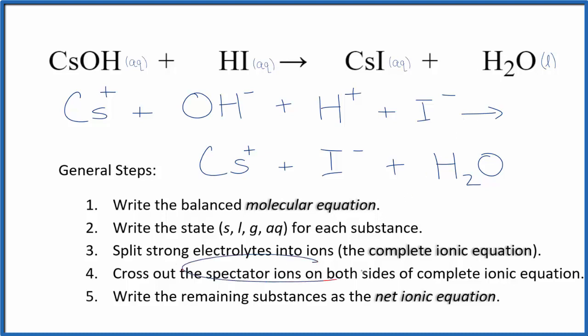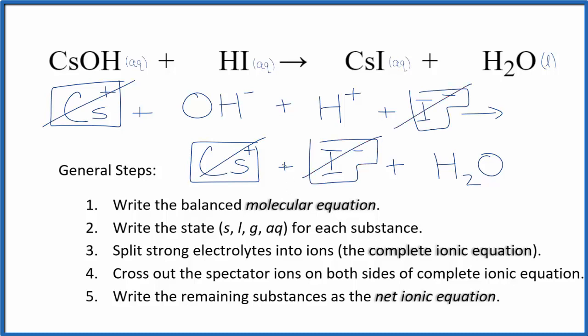Now we can cross out spectator ions. They're on both sides of the complete ionic equation. Looking at the reactants, I see the cesium ion. I have it in the products as well. That's a spectator ion, so we're going to cross that out. The iodide ion is again in the products. Spectator ion, cross it out.